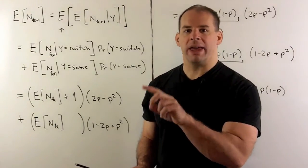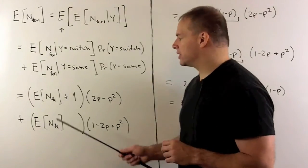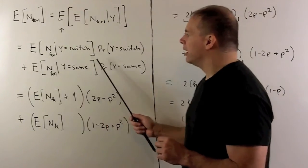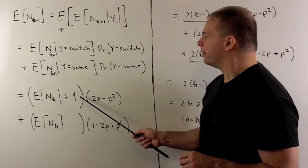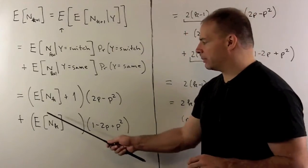the expected number of switches in the first K flips does not depend on what we do in the K plus first flip. So, whether we have a switch or not in the last two flips has no effect on this expected value here. So, this term, if I have a switch in the last two flips, we add one. If they're the same, we just leave it alone. So, we have E sub NK.